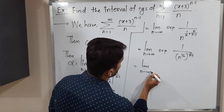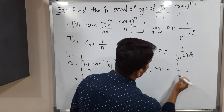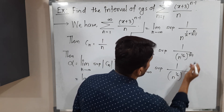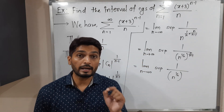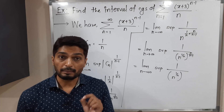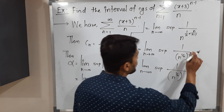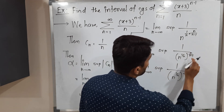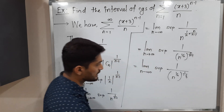This gives the limit as n tends to infinity of the supremum of 1 upon (n raised to 1/n) raised to the power n/(n minus 1). In that power, I will divide numerator and denominator by n, giving 1 upon (n raised to 1/n) raised to the power 1/(1 minus 1/n).